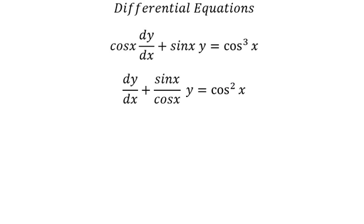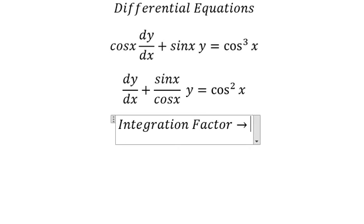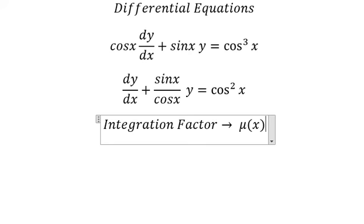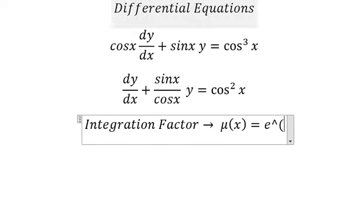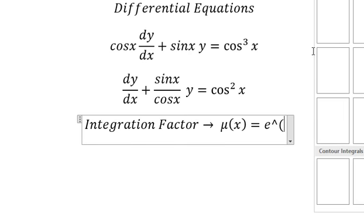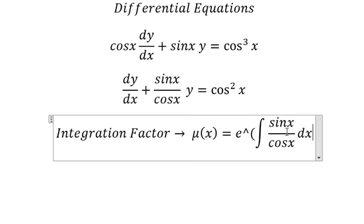Next, we need to find the integration factor. So we get μ(x) that is equal to e to the power of the integral of sine x over cosine x dx.